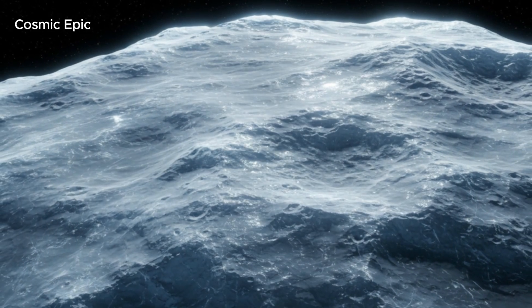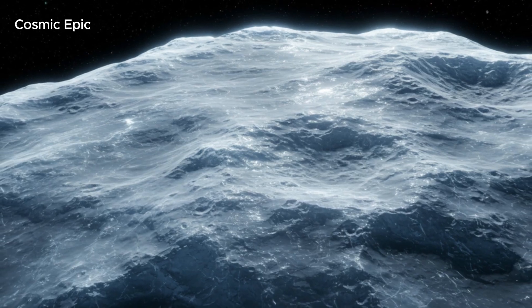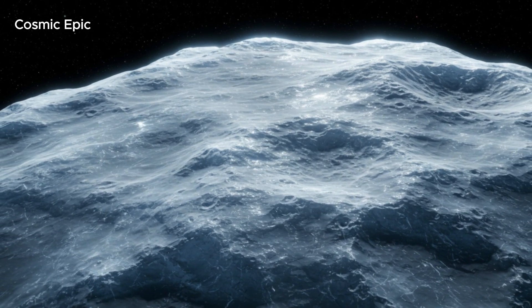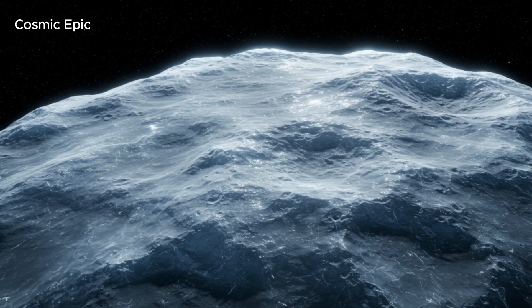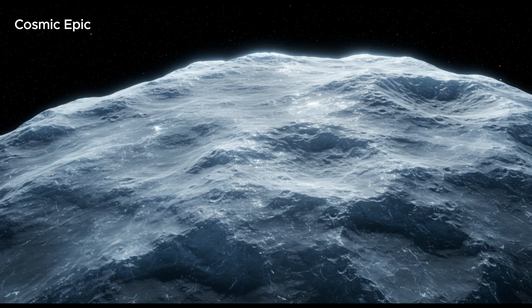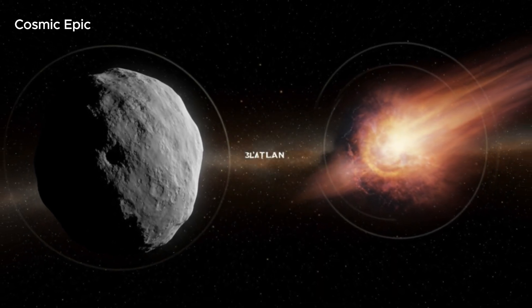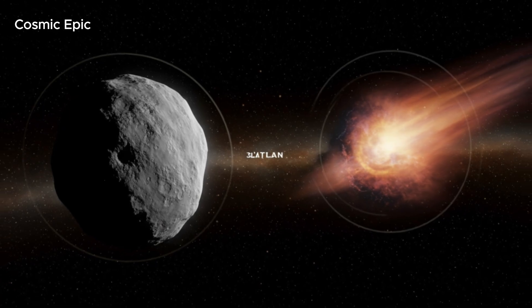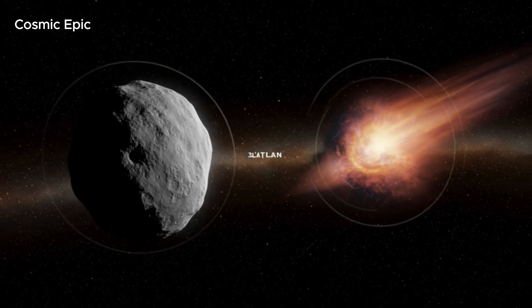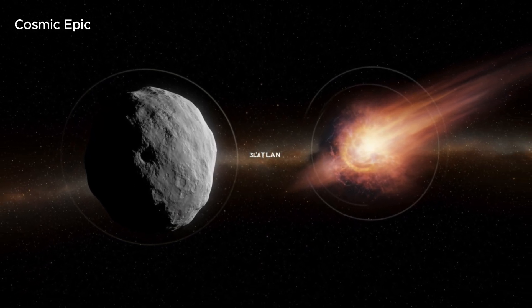And that makes the recent arrivals feel less random. Three objects in six years, all different, all appearing just as our technology became good enough to spot them. Is that just coincidence, or are we part of something bigger, a system we haven't recognized yet, a galactic rhythm that moves on timescales far beyond our own?